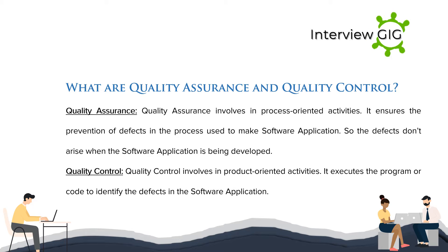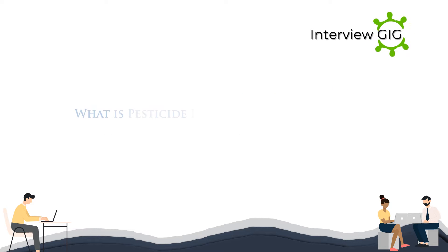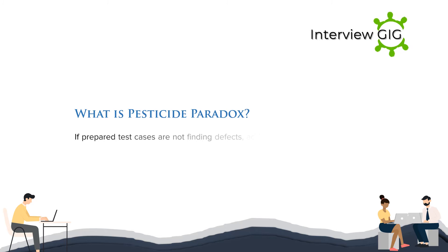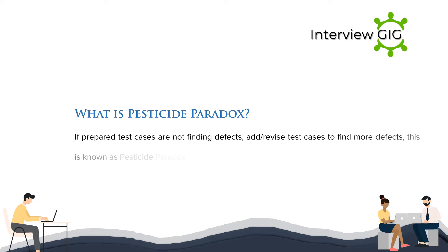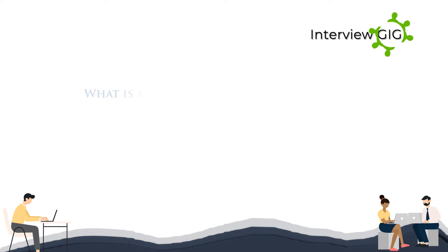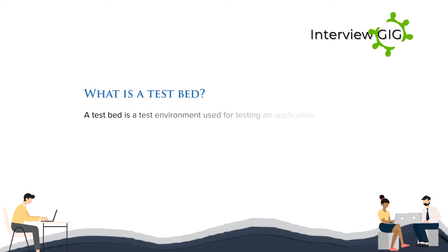What is pesticide paradox? Once the prepared test cases are not finding defects, add or revise test cases to find more defects — this is known as pesticide paradox. What is a test bed? A test bed is a test environment used for testing an application.